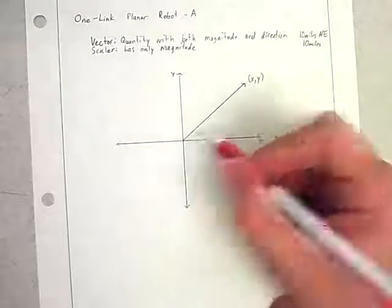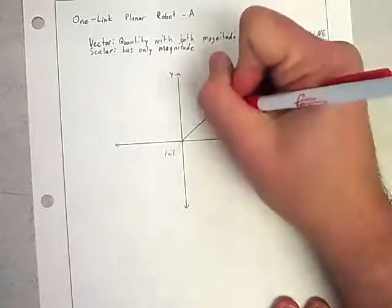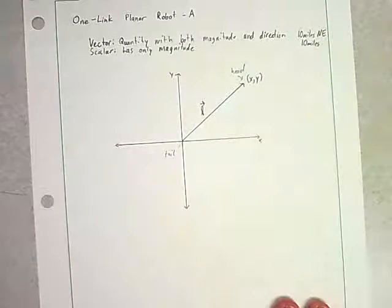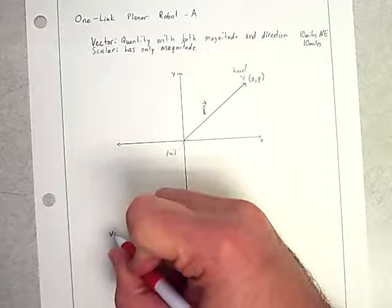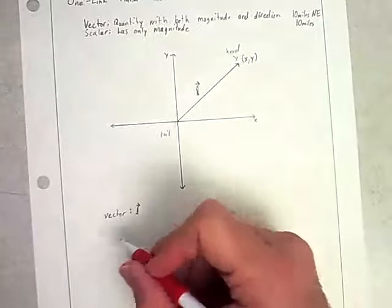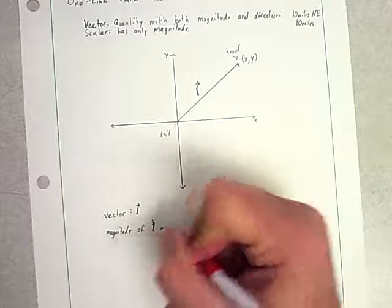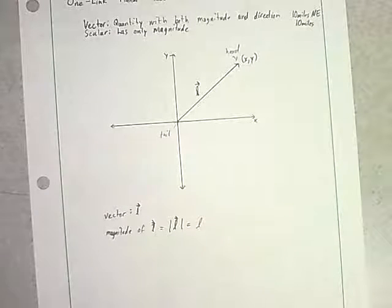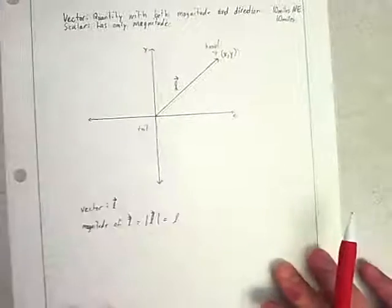And so we draw a vector. It has a tail. It has a head. We label our vector. They suggested we call this one L. And generally when we label a vector, we have a little arrow over the top to indicate that it's a vector, not just a quantity. So we have vector L. If we want to know the magnitude of L, we can write it in absolute value form, or a lot of times that's when you'll just see it written as that magnitude without the arrow on it.